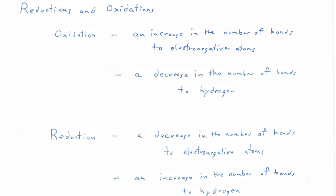In organic chemistry, oxidation is a loss of electron density and reduction is a gain in electron density. The way we change electron density through oxidation or reduction is typically by manipulating the number of bonds that an atom has to electronegative atoms. So an oxidation to an organic chemist is an increase in the number of bonds to an electronegative atom. It often also results in a decrease in the number of bonds to non-electronegative atoms — typically hydrogen or occasionally carbon. An oxidation can be one or both of those things.